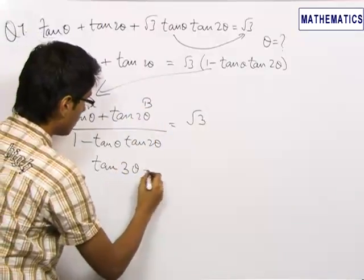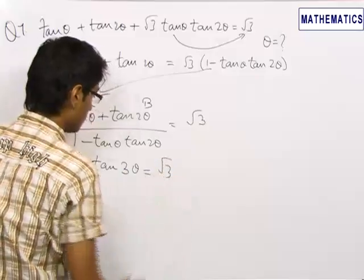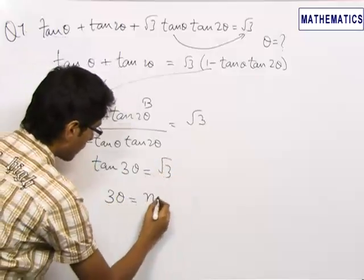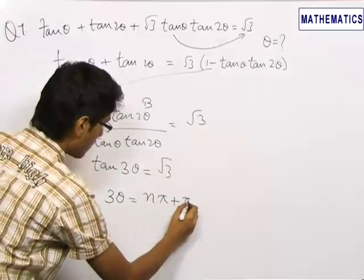So, this becomes tan 3θ equals √3. So, 3θ is equal to nπ plus π by 3.